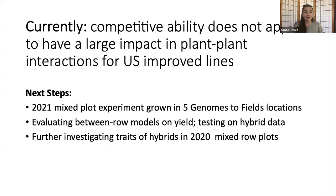Currently, competitive ability does not appear to have a large impact in these plant-to-plant interactions for US improved lines. In the 2021 field season, this mixed plot experiment will be grown in five Genomes to Fields locations, providing a large amount of data to examine. Additionally, the between-row models are being expanded to look at hybrid data, since the NAM data was all in inbreds, and further investigation of traits in the 2020 dataset may reveal contrasting traits or other impacts of interest.